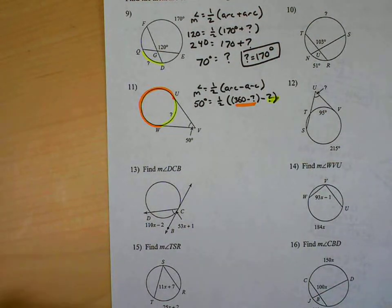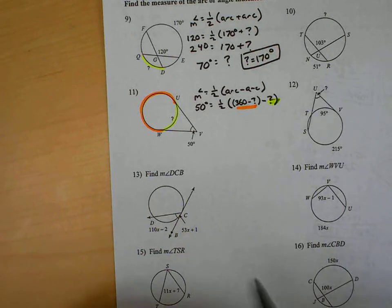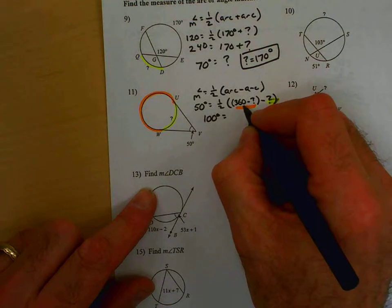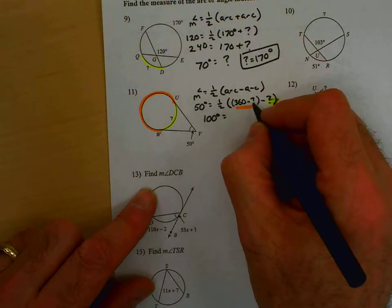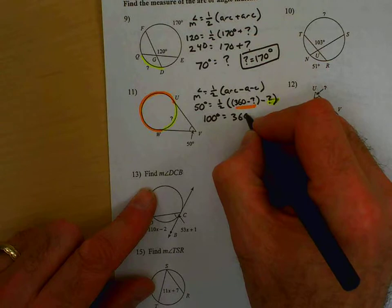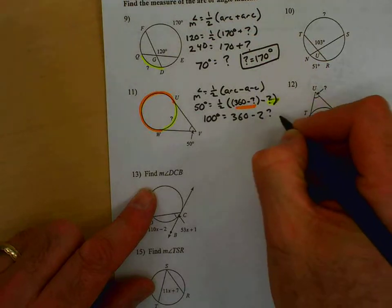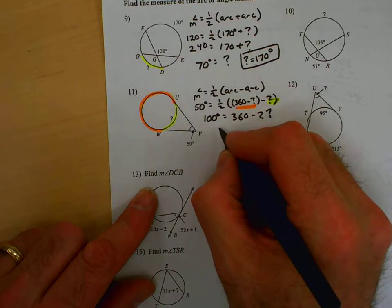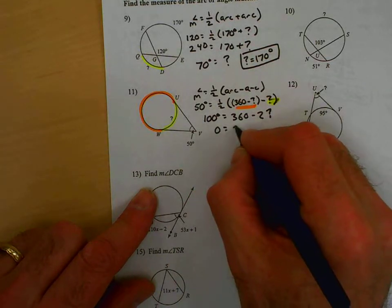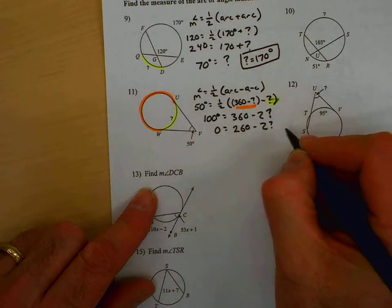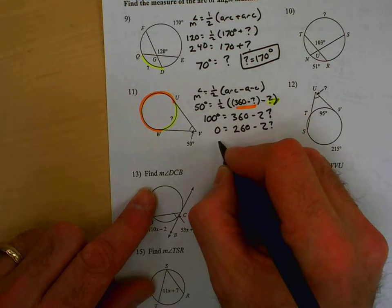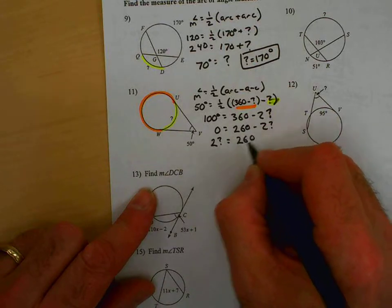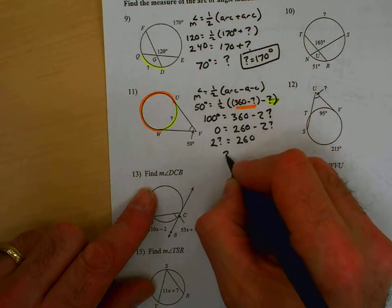So, now, if I look at that, double both sides, as usual, you get this. And that's going to be 360 minus question mark minus question mark, which is really 360 minus two question marks. Subtract 100 from both sides, you get 0 equals 260 minus two question marks. I can add two question marks to both sides. And I get two question marks equals 260. Divide by 2, you get question mark equals 130.